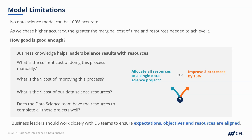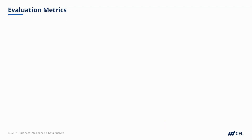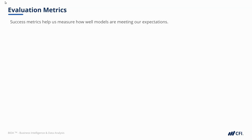We can only calculate the right balance by working together. Business leaders should work closely with data science teams and business experts to ensure expectations, objectives, and resources are aligned. Once business leaders and data scientists are aligned on goals, priorities, and measures of success, we can build our model. But a finished model isn't always a good model. Success metrics help us understand how well our models may perform in the real world and whether they'll meet objectives or expectations.